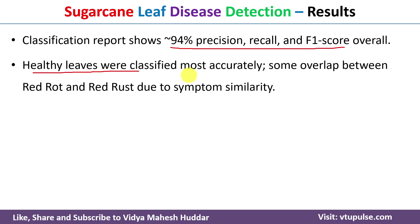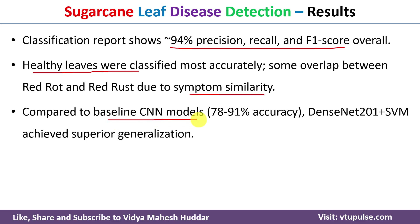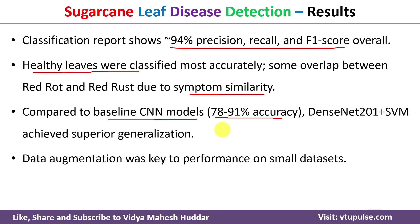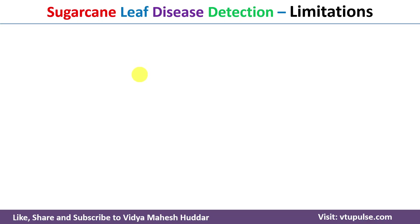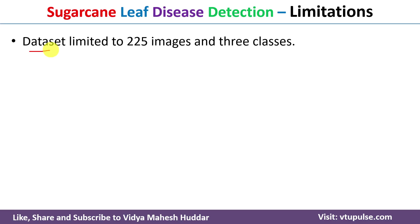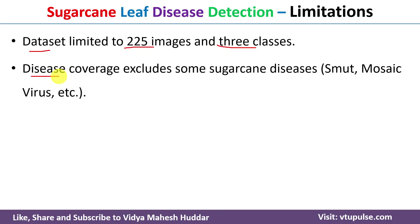Healthy leaves were classified most accurately. There is some overlap between red root and red rust due to symptom similarity. Compared to baseline CNN models achieving 78–91% accuracy, our DenseNet201 and SVM model achieved superior generalization. Data augmentation was key to performance on a small dataset. The Flask app enables real-time use by farmers. The dataset contains only 225 images and three classes, and only red root and red rust are covered as diseases. Other sugarcane diseases like smut and mosaic virus are not included, which is a limitation.